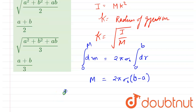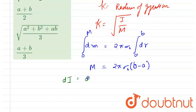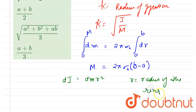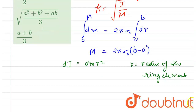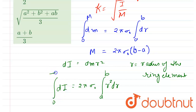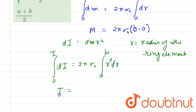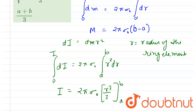Now let's calculate the moment of inertia. The moment of inertia of the ring element is dI = dm × r², where r is the radius of that ring element. Substituting dm = 2π·sigma₀·dr, we get dI = 2π·sigma₀·r²·dr. Integrating from a to b gives I = 2π·sigma₀ × (b³ − a³) / 3.